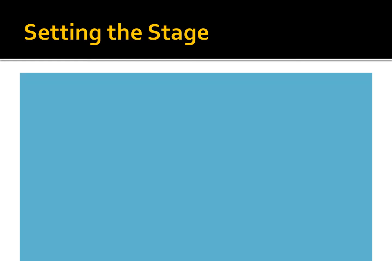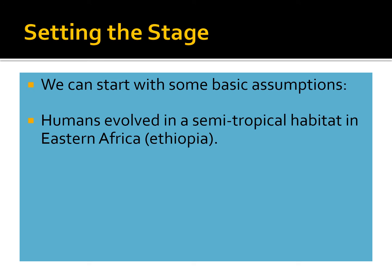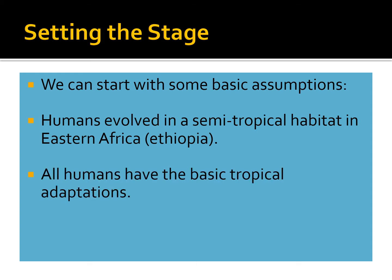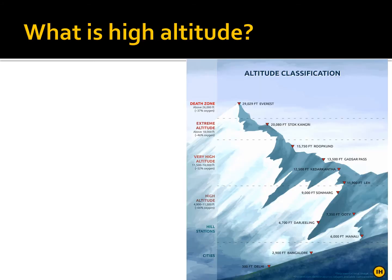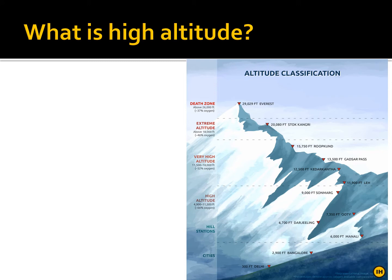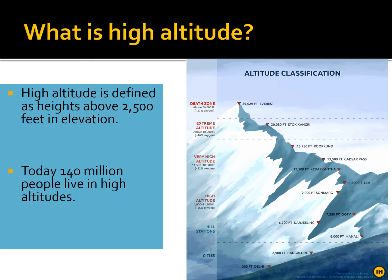Based on what we talked about in the last lecture, we can start with some basic assumptions: humans evolved in a semi-tropical habitat in eastern Africa, more particularly eastern Ethiopia. All humans have the basic tropical adaptations, and survival in cold temperatures really depends initially on cultural adaptations like fire, clothing, and shelter. When we talk about altitude, we're dealing with significant stressors. High altitude is defined as heights above 2500 feet in elevation.